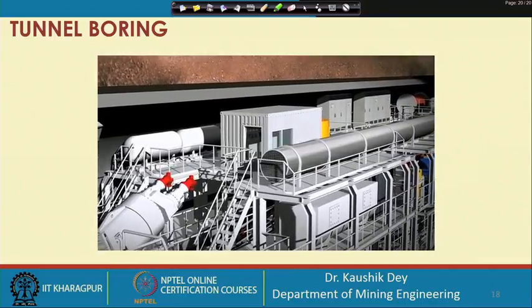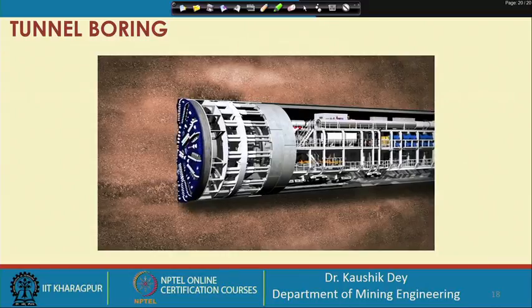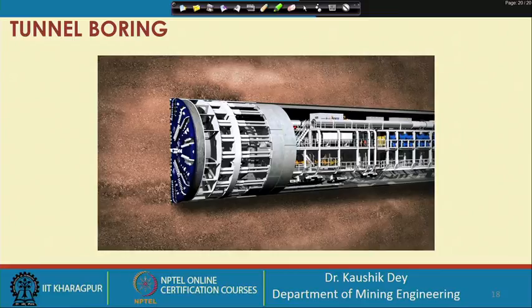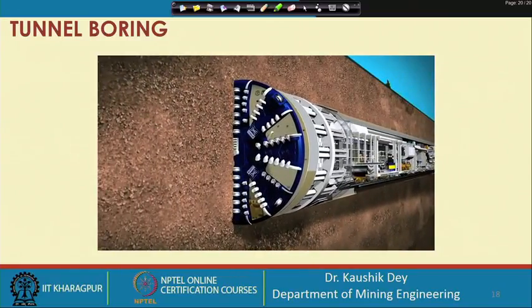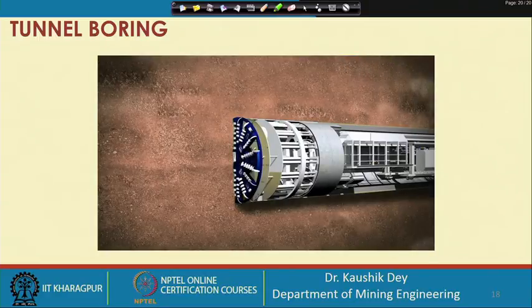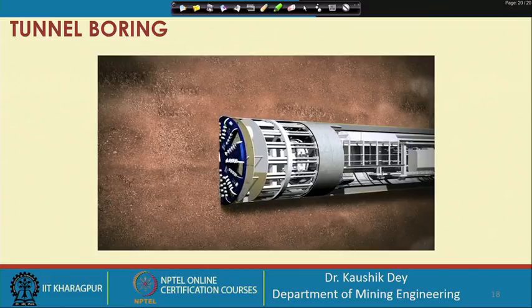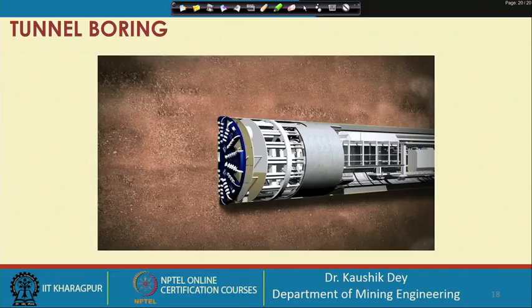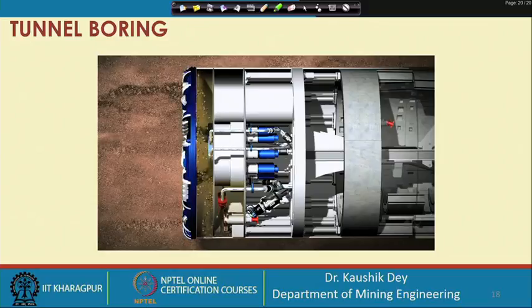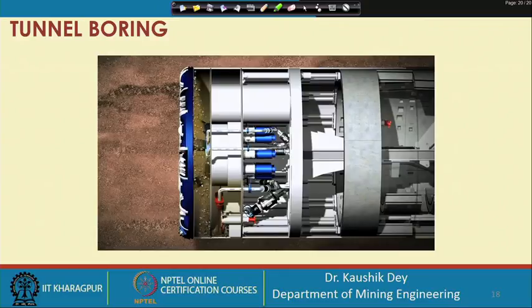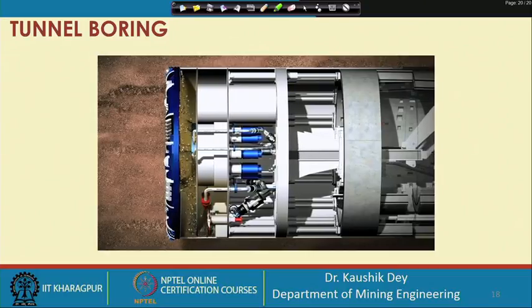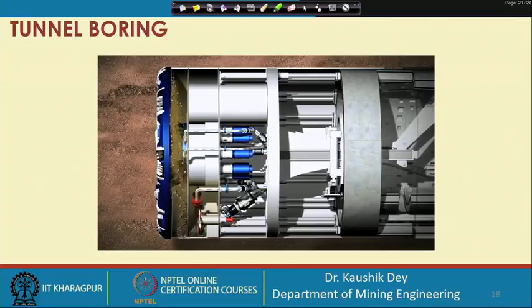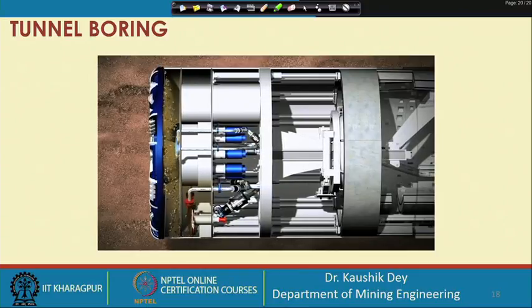However, the problem with large diameter tunnel boring machines is that capital requirements are very high — a TBM may cost around 50 to 100 crore rupees. Additionally, TBM installation time underground is very high. A pilot tunnel of 70–80 meters must first be created to install the TBM inside, after which TBM work begins. Therefore, TBM can be adopted only for cases where a long tunnel has to be constructed.